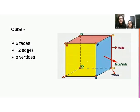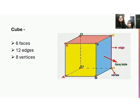Correct. So today we are going to discuss about different geometrical shapes. Our first shape is cube. Which shape is this, Ajvika? This is a cube.